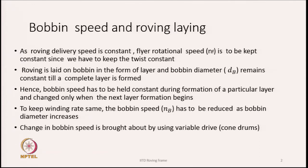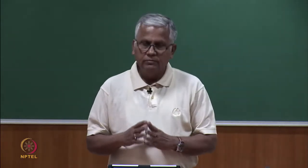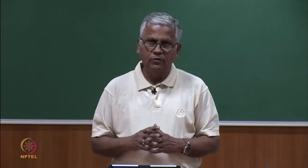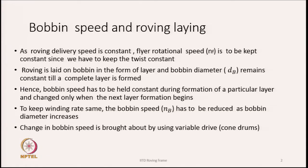During roving bobbin formation, the roving is laid on the bobbin in the form of layers, and the bobbin diameter remains constant until a complete layer is formed. So once we start building a particular layer, from that time onwards until that layer is completely formed, the speed of the bobbin should remain constant — it should not change.